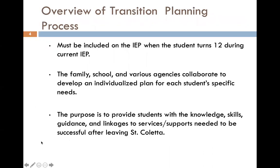These services are always going to be strengths-based and focus on the student's abilities rather than their disability. The transition planning process starts at age 12, during their current IEP. The family, the school, and various agencies will all collaborate to develop an individualized plan for each student's specific needs. The purpose is to provide students with knowledge, skills, guidance, and linkages to services and supports that might be needed to be successful after St. Coletta.